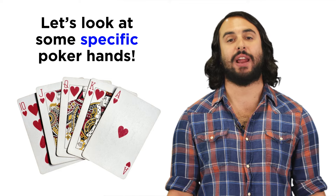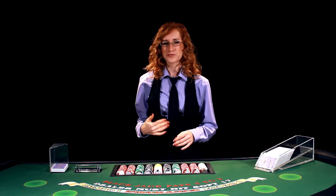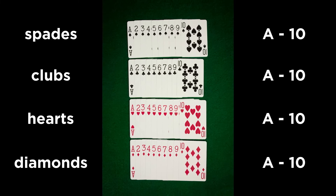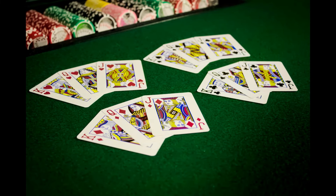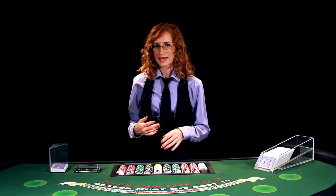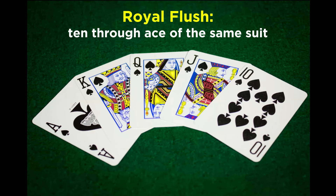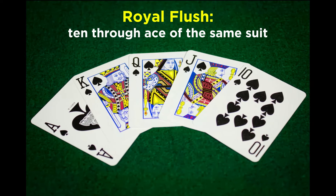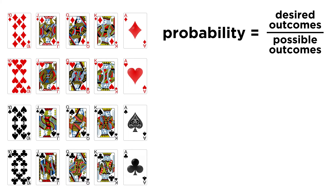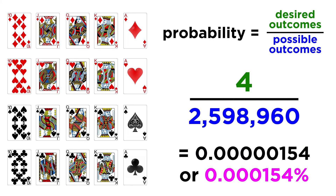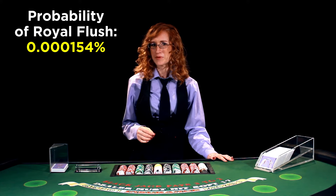Now to look at specific poker hands, let's check back with Heather. A standard deck has four suits — spades, clubs, hearts, and diamonds. Each suit consists of ten numerical cards from ace through ten, and three face cards: jack, queen, and king. Let's start with the best hand you could get, a royal flush: a ten, jack, queen, king, and ace all of the same suit. There is only one of these per suit, and there are four suits, so there are only four possible hands that result in a royal flush. Four divided by the total number of possible hands is an incredibly tiny percentage. Basically, if you get one of these in your lifetime, you're extremely lucky.